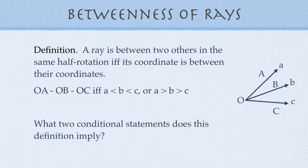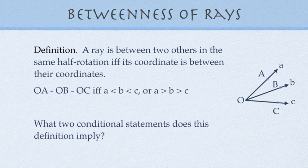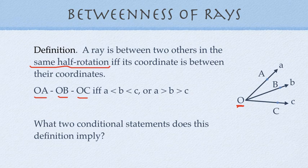Betweenness of rays works very similarly. A ray is between two others in the same half rotation if and only if its coordinate is between their coordinates. Now, that phrase, same half rotation, means that all the rays we're talking about emanate from the same place, letter O in this particular diagram. So that if OB is between OA and OC, then it must be true that their coordinate measures, when you lay it out and you put the protractor on it, the degree measure where OA lands at A degrees, and then B degrees and C degrees. So, that means, if we have betweenness of rays, those things are emanating from the same center, and B is between A and C, then A is less than B is less than C, or A has got to be greater than B and greater than C. What two conditional statements does this definition imply? Remember that if and only if? I'll let you try and sort it out on your own there.